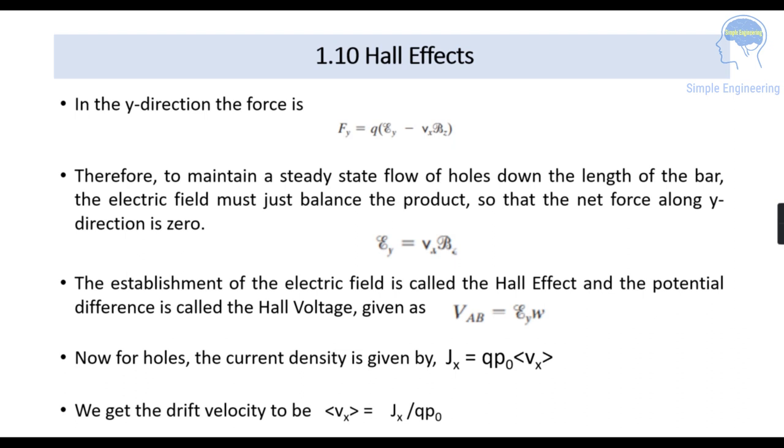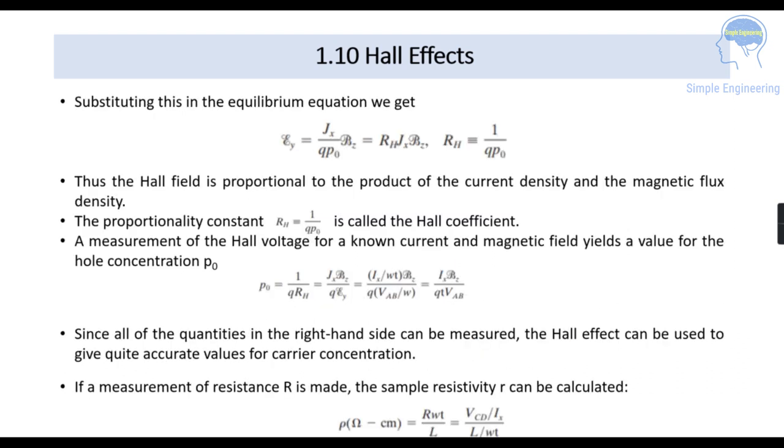That is in terms of current density we have rearranged that equation. So substituting this in the equilibrium equation we get εy is equal to Jx by qp0 into Bz. And this we can take it as a proportionality constant that we denote it as Rh where it is the Hall coefficient. So the Hall field that is proportional to the product of the current density and the magnetic flux density. So current density that is denoted as Jx and magnetic flux density is denoted as Bz.